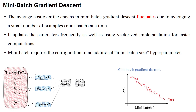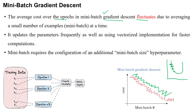Because this update is done for each mini-batch, the gradient descent curve fluctuates for each epoch. Unlike stochastic gradient descent which produces a smooth learning curve, mini-batch gradient descent shows a fluctuating learning curve. This is due to using a small number of samples to compute and update gradients at each iteration.